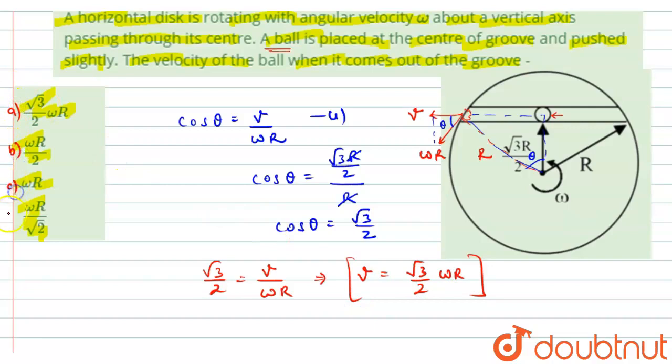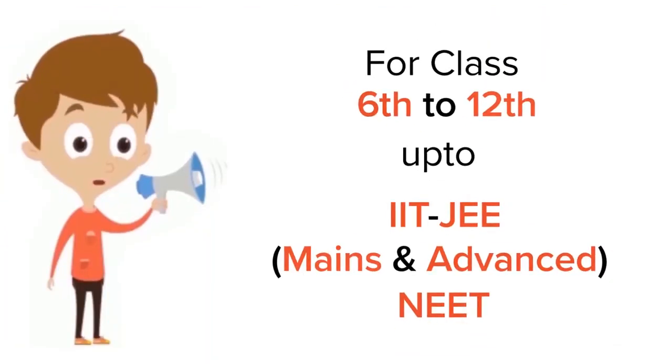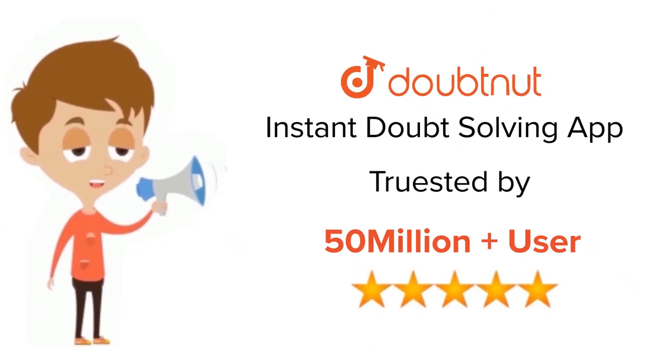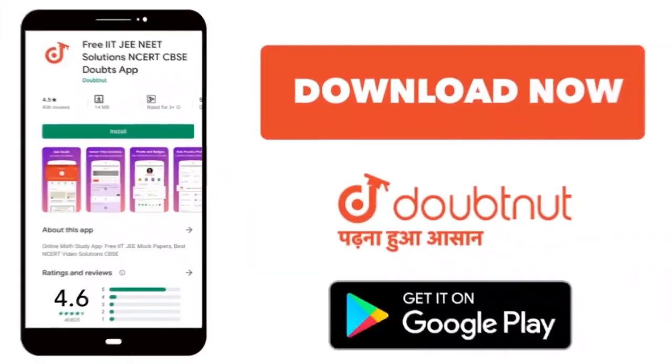And from the given options, we have a, b, c and d. Option a is the correct answer. Thank you. For class 6 to 12, IIT JEE and NEET level, trusted by more than 5 crore students. Download Doubtnet app today.